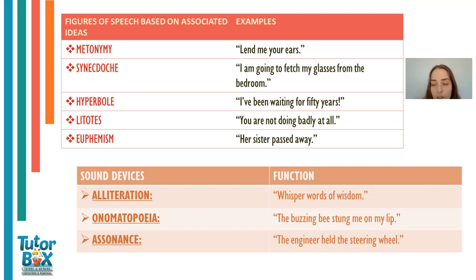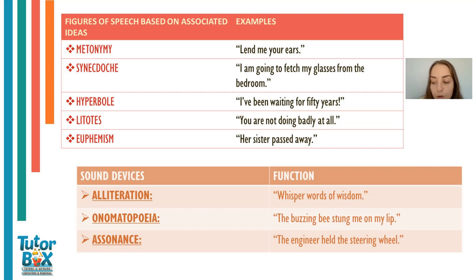Moving on to sound devices. Alliteration is the repetition of beginning consonant sounds at short intervals of different words. The function is that it links important words and emphasises them, imitates sounds mentioned in the poem, and influences the rhythm, either slowing down or increasing the tempo. Onomatopoeia is forming words from sounds that resemble those associated with objects or suggestive of its qualities. The purpose is that it imitates the sounds referred to and helps create a vivid picture, making the scene more immediate and real to the reader. Assonance is the repetition of vowel sounds in two or more words without the repetition of the same consonant. The function is that it creates vivid oral images by imitating the sounds of objects mentioned in the poem.